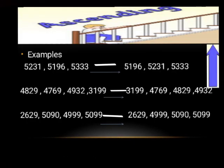Students, here are some examples of 4 and 5 digit numbers and we arrange these numbers in ascending order. First example is 5231, 5196 and 5333. In this example, 4 digit numbers are present and we arrange these numbers into ascending order.